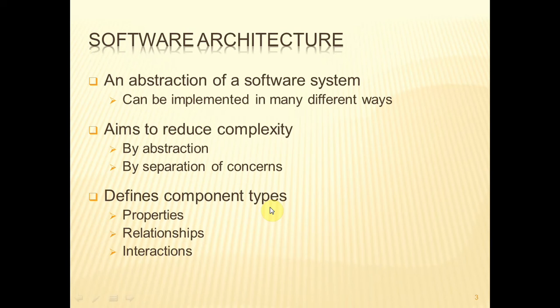Abstraction allows us to focus on the major components without being distracted by the low level detail. With a view of only the high level components, we can then see the structure much more easily. And when we devise some kind of abstraction for our software architecture, it means that we're then able to take that abstraction and implement it in different ways. What I'm going to say about MVC will be applicable to any kind of software that uses that architecture.